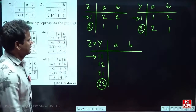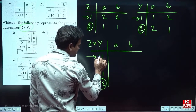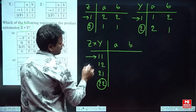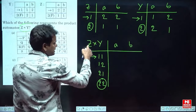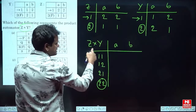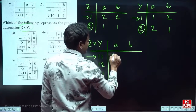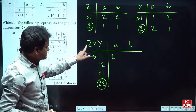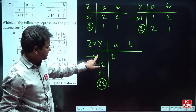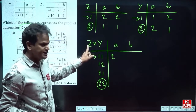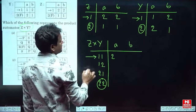Now, here is how to write the transitions. The first number in each pair belongs to Z and the second number belongs to Y. So for state 1,1 on input A: in Z, state 1 on A goes to 2.